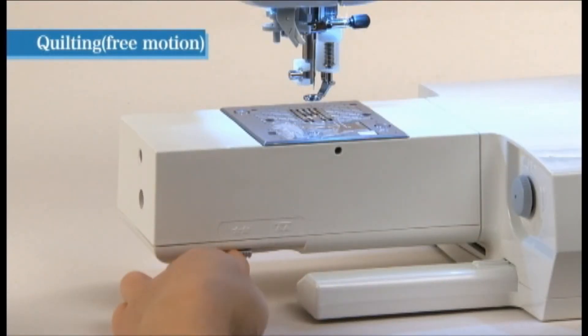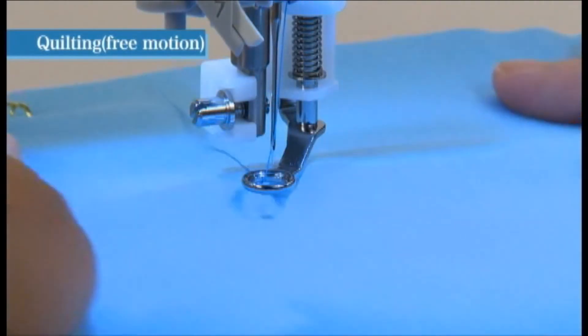Slide the drop feed knob to the right to lower the feed dog. Place the fabric under the presser foot.